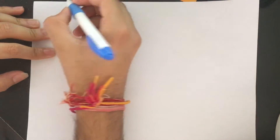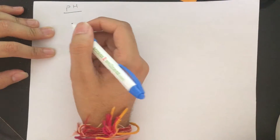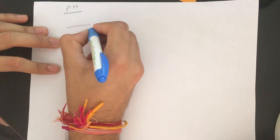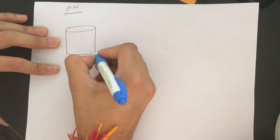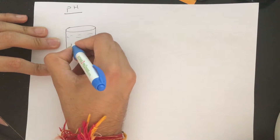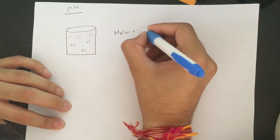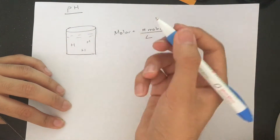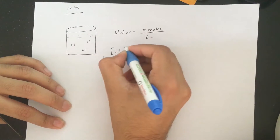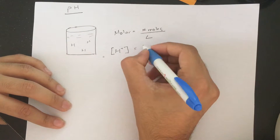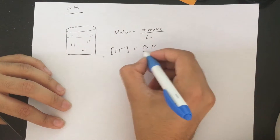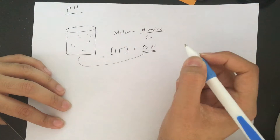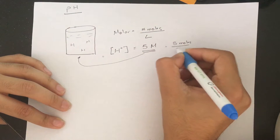This is a short video on pH and pKa. pH is just a measurement of how many hydrogen ions there are in solution. In chemistry we use the term molar, which is basically the number of moles over liters. So you can have hydrogen concentrations — written in brackets to mean concentration — like 5 molar, which implies there are 5 moles of hydrogen per every one liter of solution.